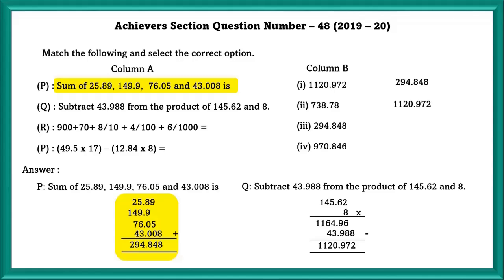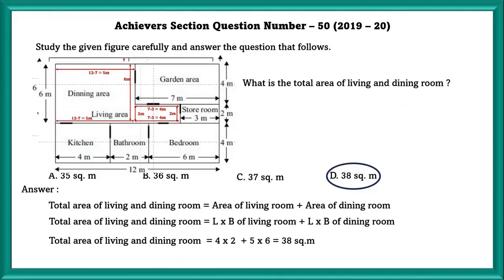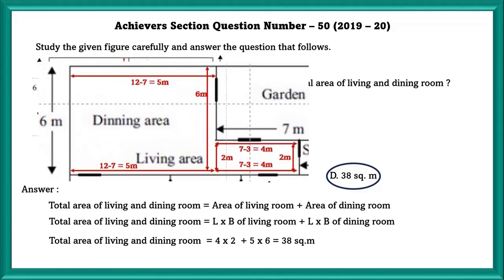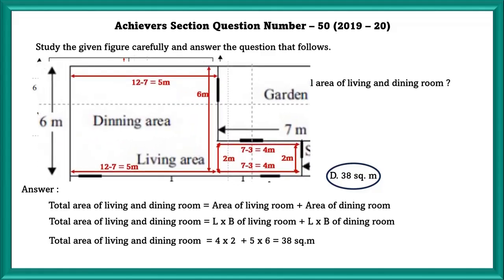In this question they have asked to find the area. In order to find the area, we need to find the missing lengths and breadth, but don't get carried away thinking that they have asked to find the perimeter. So in order to find the area, we need to divide the figure into rectangles and squares.